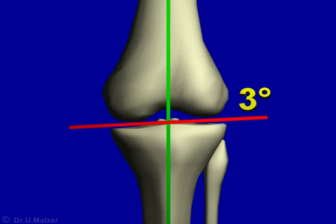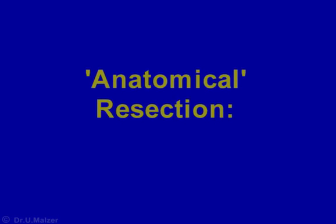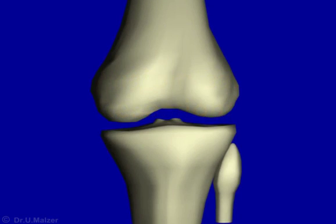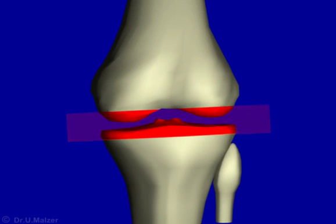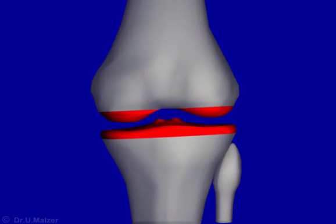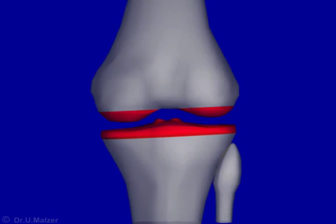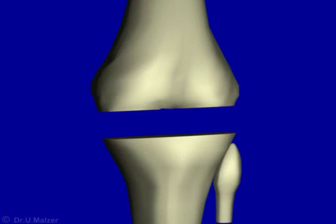The normal anatomical pattern has important implications for resection. In what is known as anatomical resection, the bone cuts are parallel to the anatomical slope of the joint line. In this way, equal amounts of bone will be removed medially and laterally. The bone cuts will be in about three degrees of varus with reference to the mechanical axis of the lower limb.